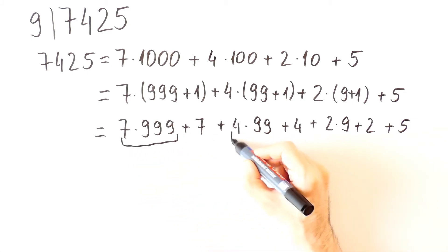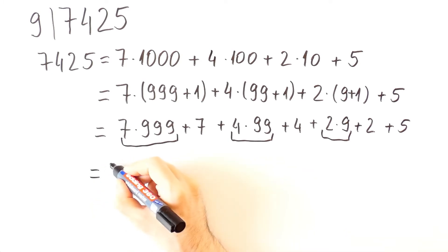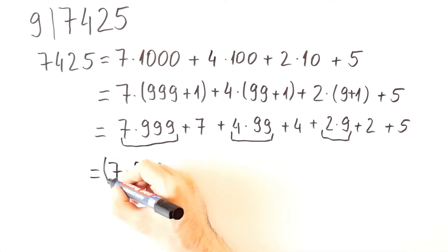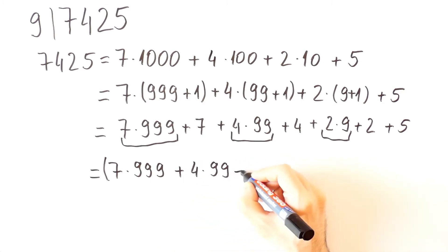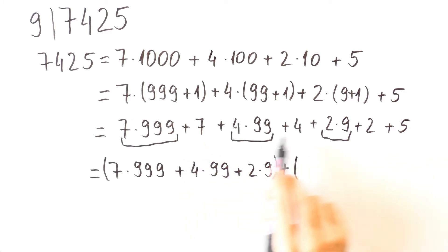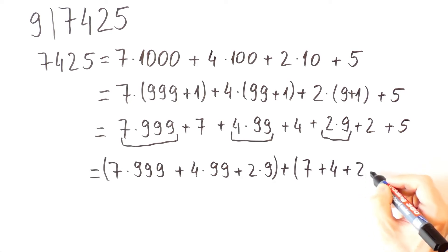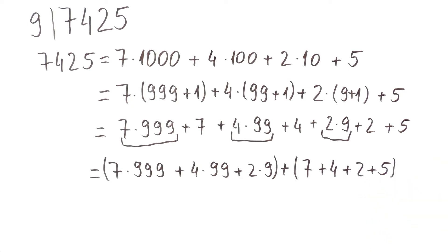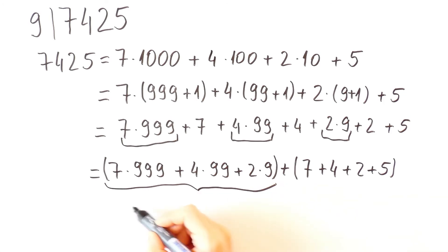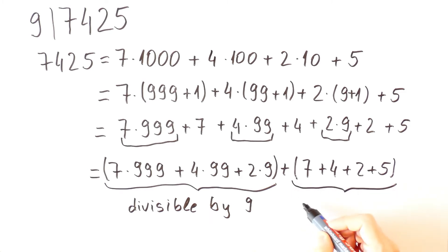These terms are divisible by 9 and we can group them together. And we are left with the sum of the digits. This part here is divisible by 9, and this part here is the sum of the digits of the initial number.